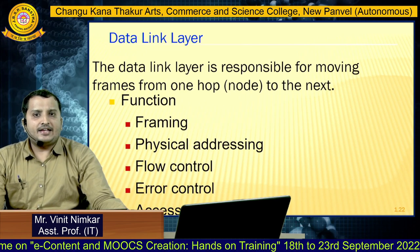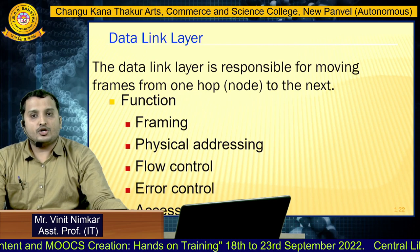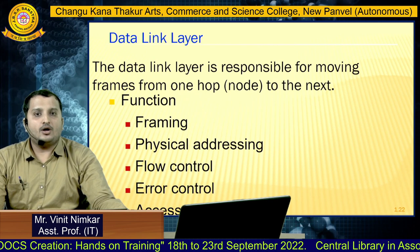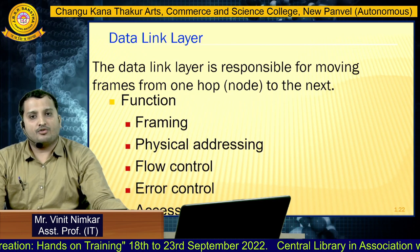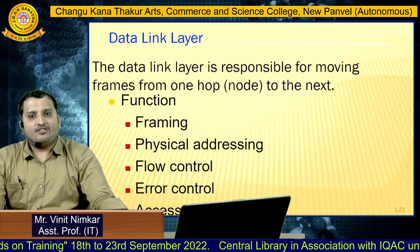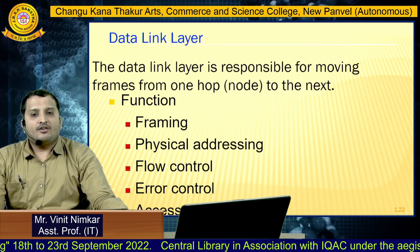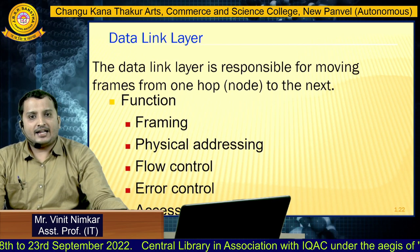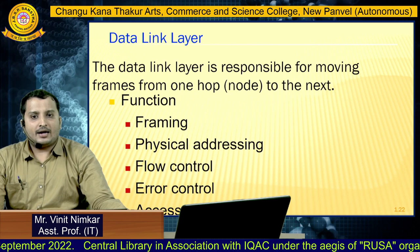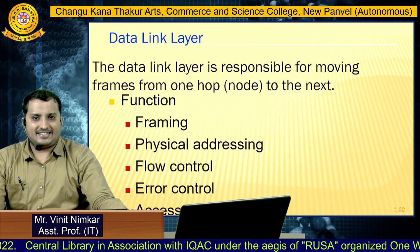The next layer is the data link layer. The data link layer is responsible for moving frames from one node to another node, or one hop to the next hop. Other functions include framing of data, physical addressing of devices, flow control, error control, and access control.